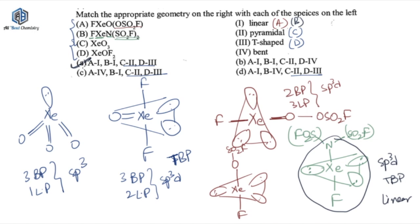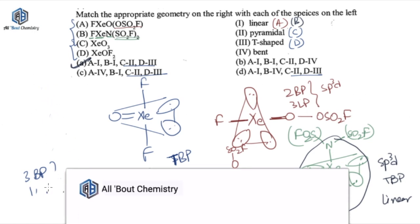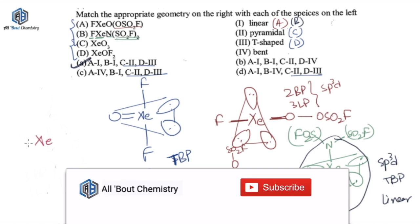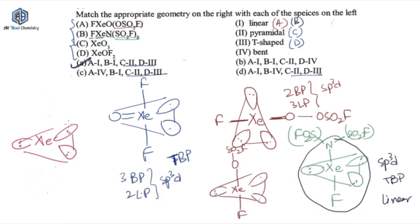Don't get confused here — you can draw the whole structure in a different orientation. Don't be confused by the bulkiness of the group attached on the axial position; it's nothing but N(SO2F)2, and on the other side we have fluoride. That's the linear molecule. Rely on VSEPR theory for these kinds of questions and you will get the answer correctly.